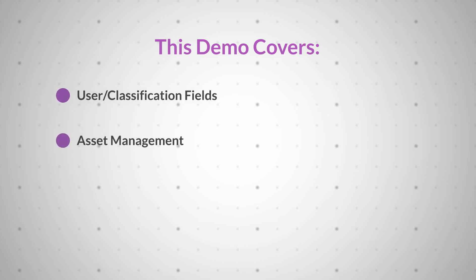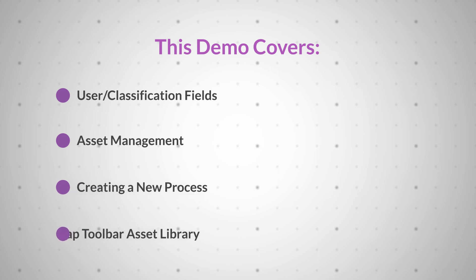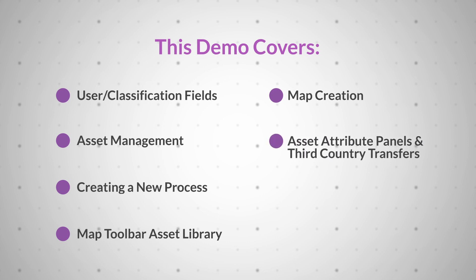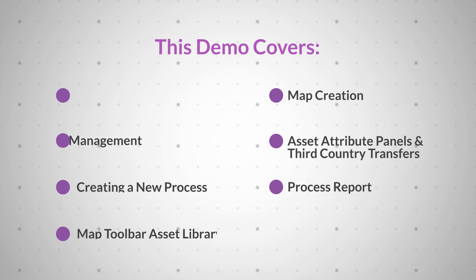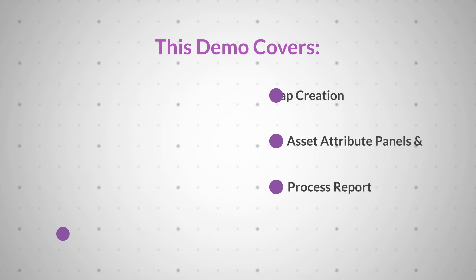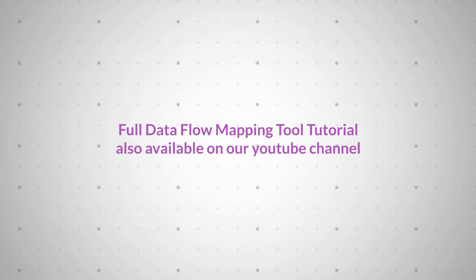Specifically I will cover user classification fields, asset management, creating a new process, the map toolbar, asset library, map creation, asset attribute panels, third country transfers, and finally the process reports. This is intended as a brief overview, but a full tutorial is also available on our YouTube channel.